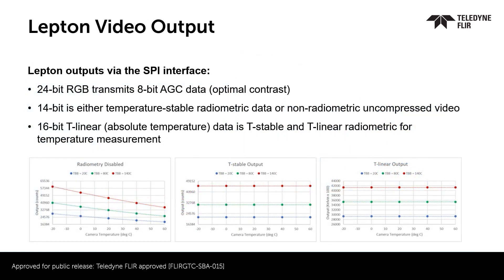The video output of Lepton has multiple formats and can come from different parts of the video pipeline. Lepton 2.5 and 3.5 are radiometric. When necessary, radiometry can be disabled. When it is disabled, the camera output is not necessarily linearly proportional to the output temperature because it's dependent on the temperature of the camera. When radiometry is enabled, the T-Stable output stabilizes the output of the camera. When T-Linear is enabled, which is by default, the output of the 16-bit interface is linearly proportional to scene temperature.